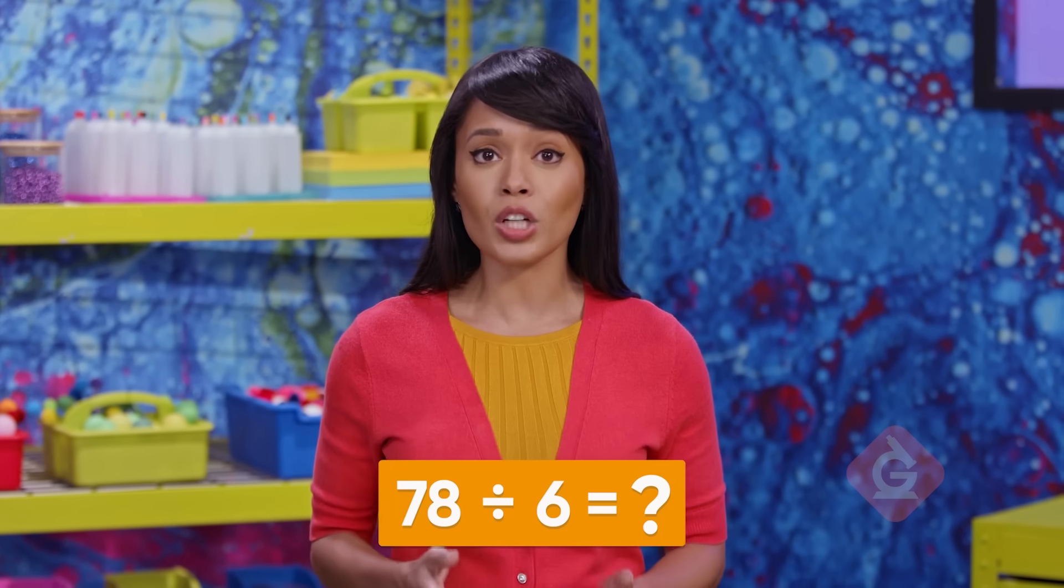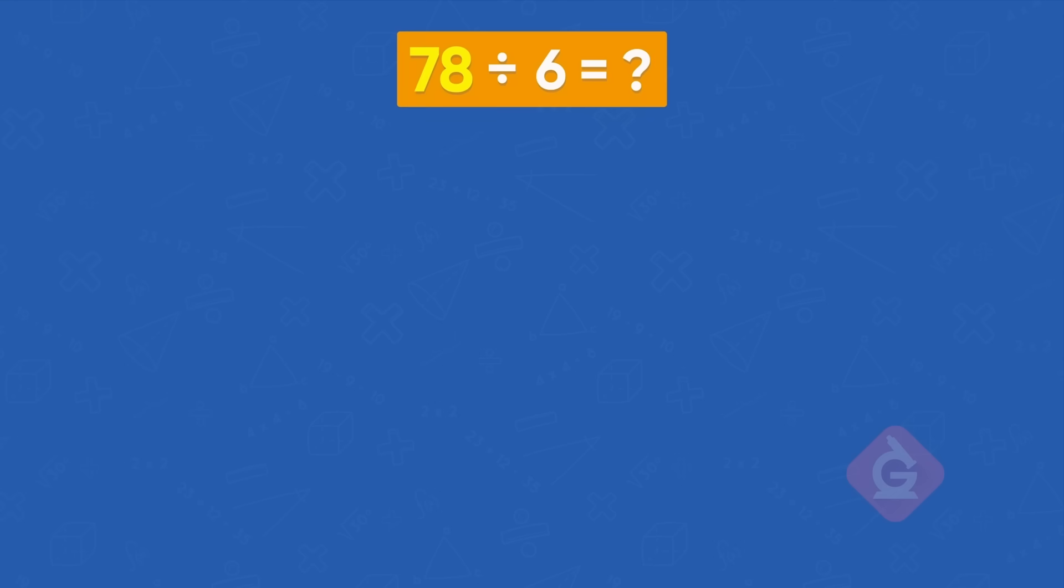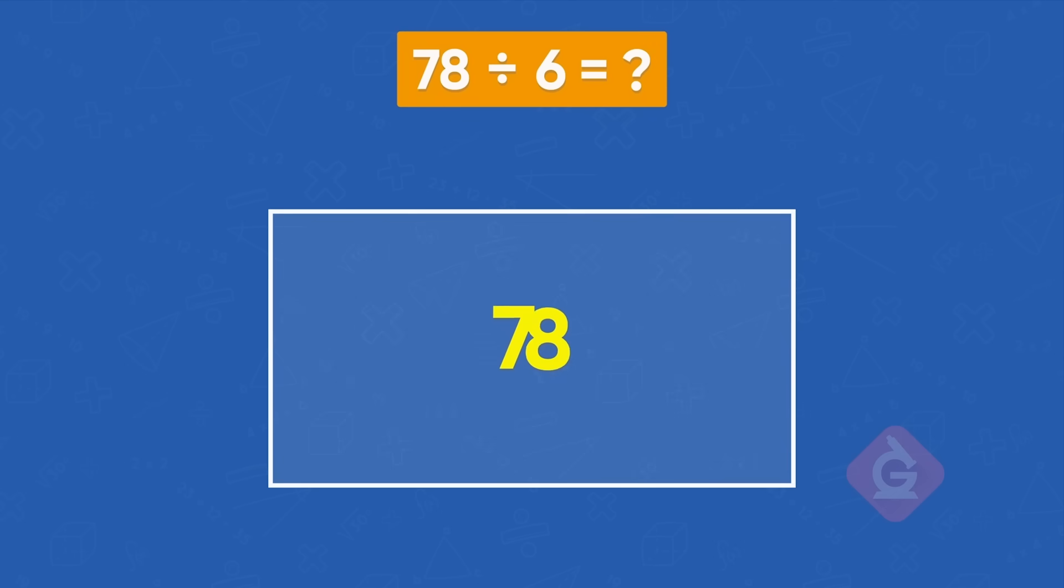It is, but we can use an area model for division, too. 78 divided by 6 can be shown as a rectangle with an area of 78, where one of the sides is 6 units long. The other side is an unknown length. If we can find this unknown length, then we have the answer to 78 divided by 6.